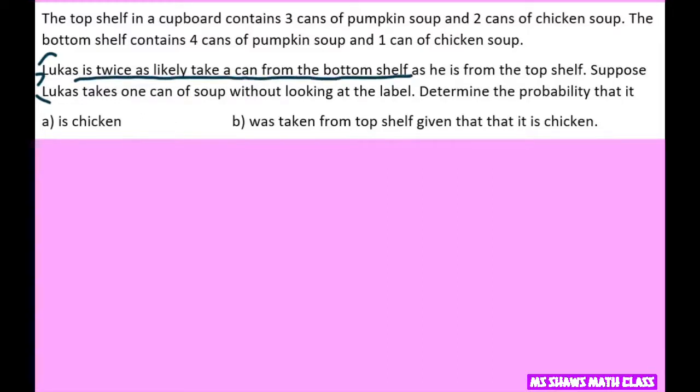he is from the top. So if you set this up, we're going to say x plus 2x equals 1 for your total. You get 3x equals 1, so x is one-third. So one-third would be the probability